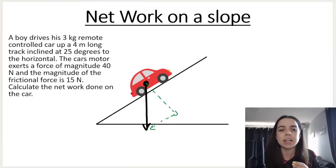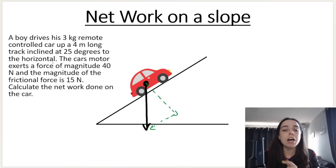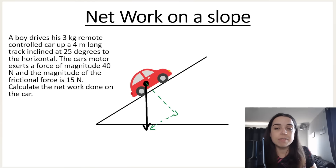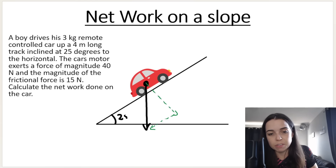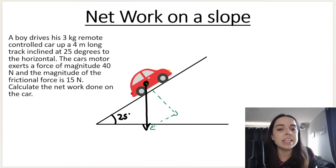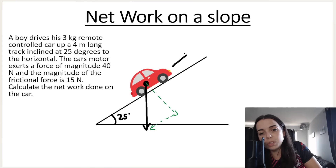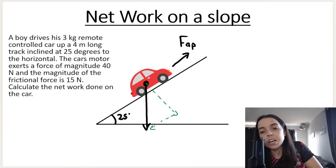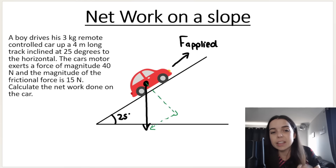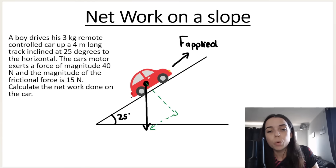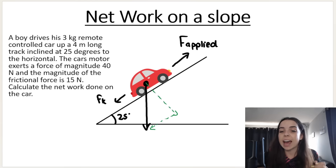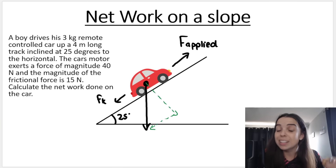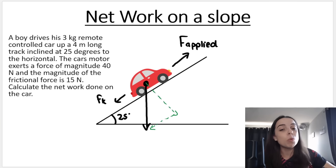So what do I mean by calculate the net work on the car? A boy drives his three kilogram remote controlled car up a four meter long track inclined at 25 degrees to the horizontal. So this angle here is 25 degrees. The car's motor exerts a forward force of magnitude 40 newtons. In other words, the force causing the car to move up the slope is parallel to the slope and going up the slope — this is almost like a force applied, or force of the engine. And then of course we have frictional force, which acts in the opposite direction. Because I have multiple forces acting on the car, there will be work done by all of these different forces and there will be a net work.